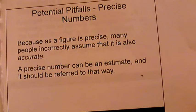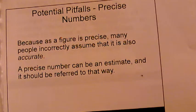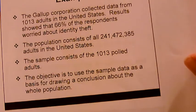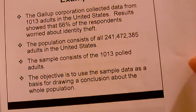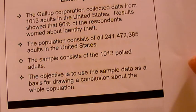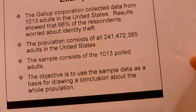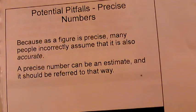Precise numbers are another pitfall. Because a figure is precise, many people incorrectly assume it is also accurate. A precise number can be an estimate and should be referred to that way. For example, stating 'the population consists of all 241,472,385 adults' gives a precise number — you might want to say 'approximately 241 million adults in the United States.' Keep it as an estimate.